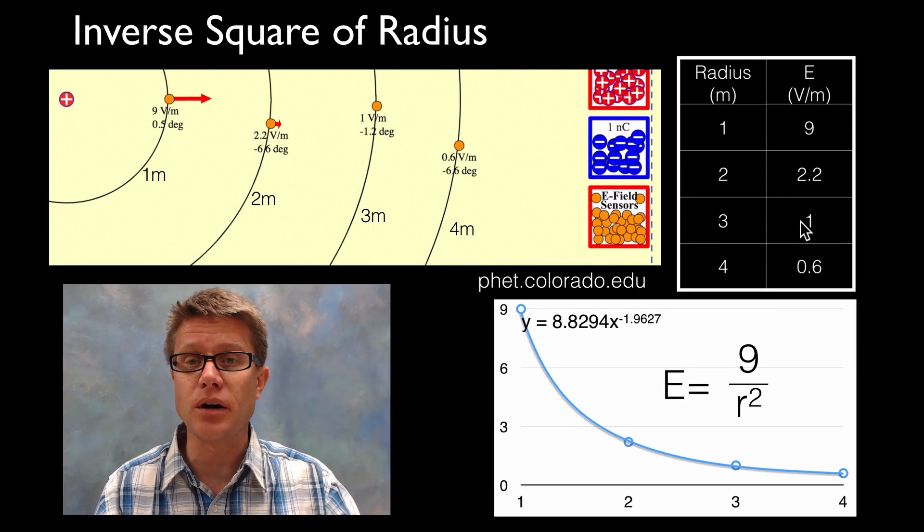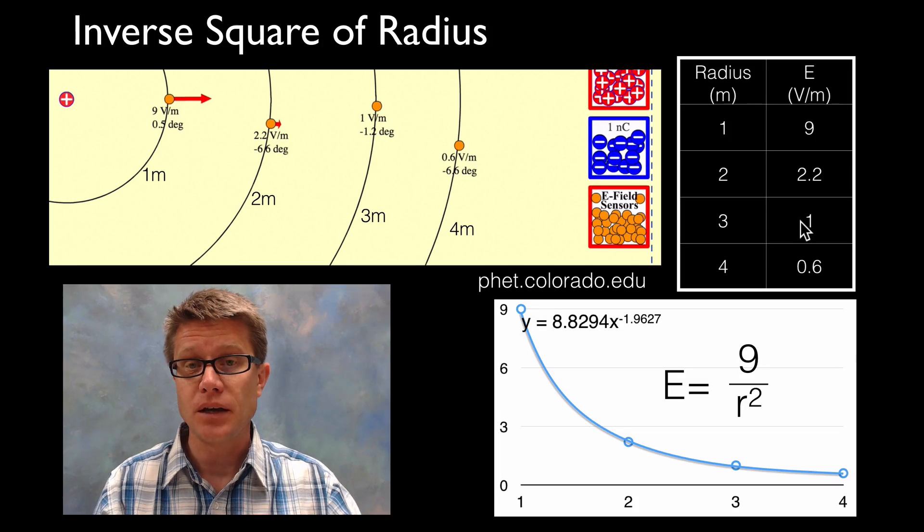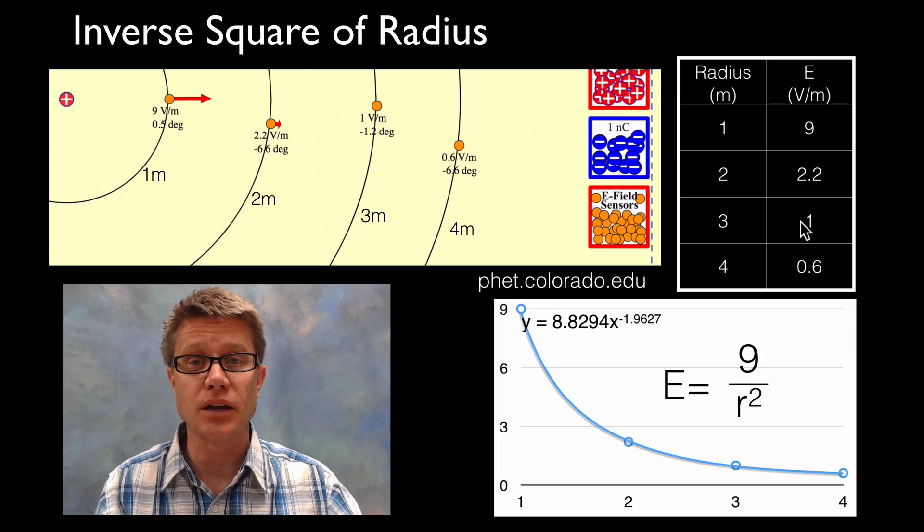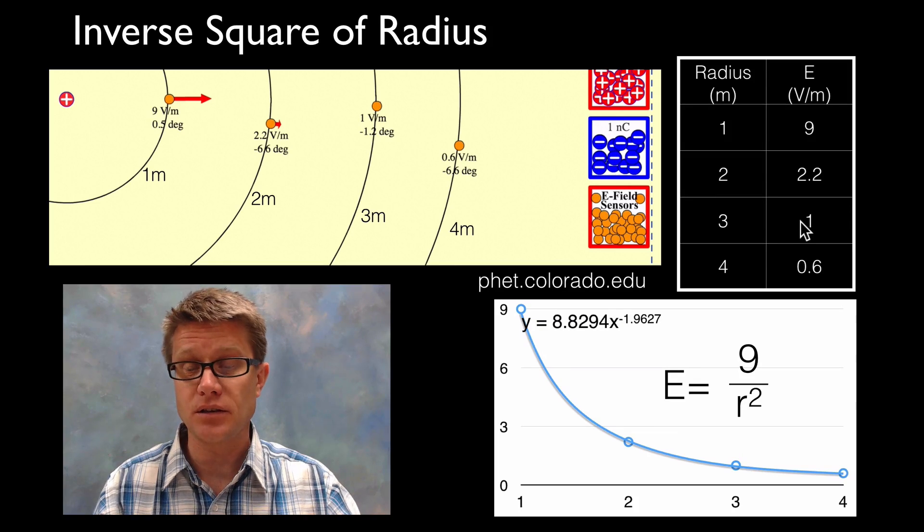And so we have this inverse square of the radius relationship. In other words, as we increase our radius, we are decreasing our electric field strength by the square of that radius. And so we just did that using this quick simulation.